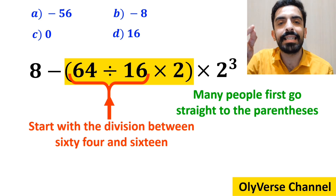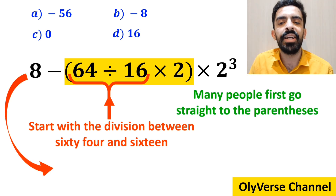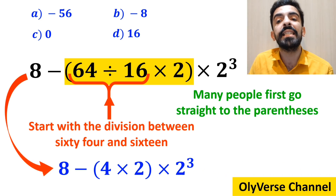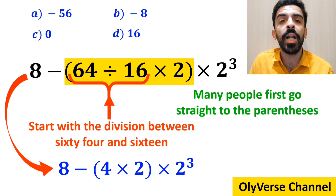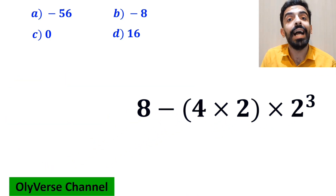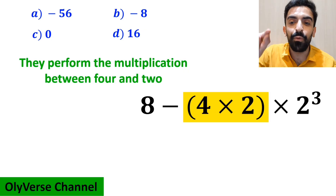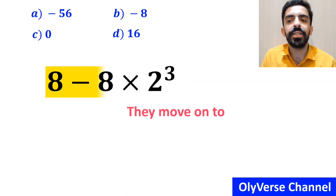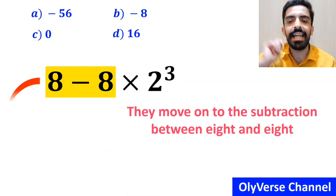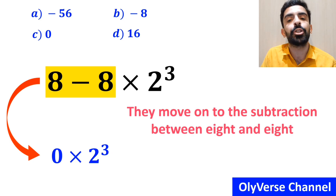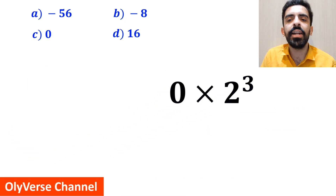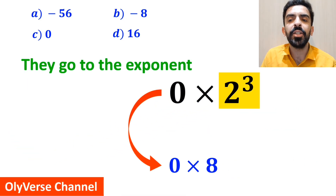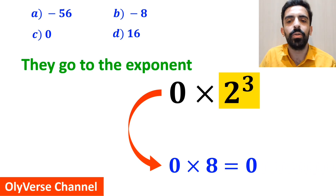...with the division between 64 and 16, so they rewrite this expression as 8 minus 4 times 2 instead of the parenthesis, then multiplied by 2 cube. In the next step they perform the multiplication between 4 and 2 and simplify to 8 minus 8 multiplied by 2 cube. Then they move on to the subtraction between 8 and 8 and rewrite as 0 multiplied by 2 cube. In the final step they replace the exponent with 0 multiplied by 8.